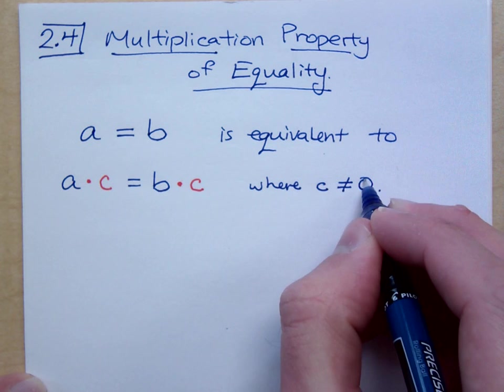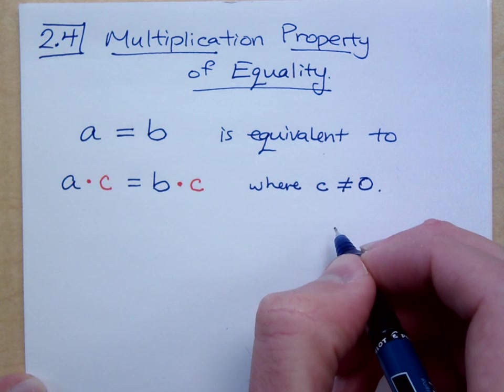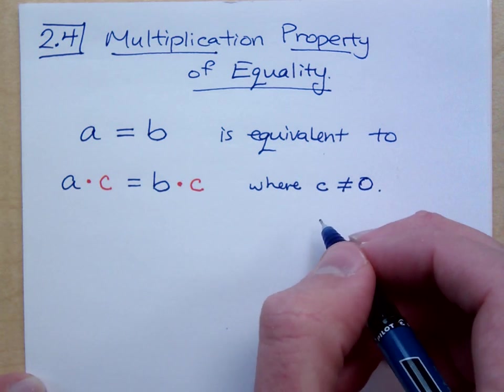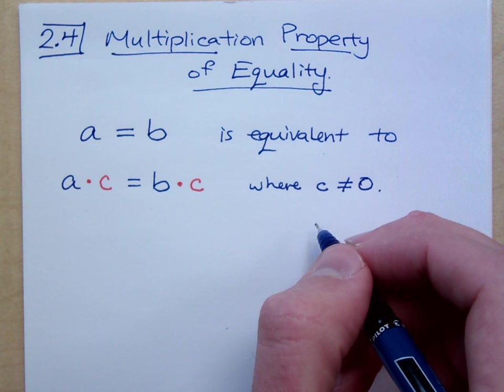When you see the equal sign with a slash through it, that means it doesn't equal. So whatever I'm multiplying both sides times, it can't be 0.